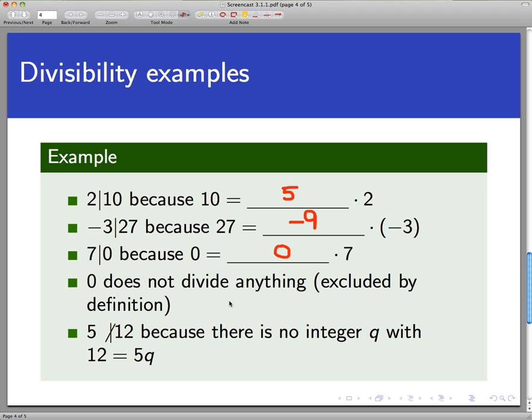0 does not divide anything. That's excluded explicitly in the definition. Division by 0 is undefined. It doesn't equal anything, not infinity or something crazy like that. Finally, 5 does not divide 12 because there's no integer q such that 12 is equal to 5q.